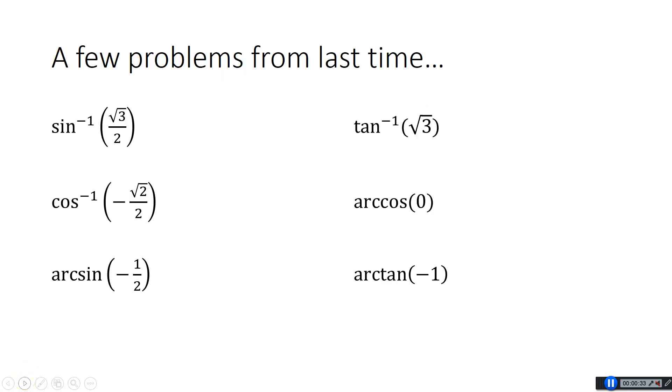We're going to start with some bell work, just a few problems from last time. If you want to pause the video here and see if you can figure out these values, feel free to do so. All right, let's take a look at them together. Sine inverse of root 3 over 2. Remember, I'm asking myself where is sine root 3 over 2? And it has to happen on the right side of the circle. Root 3 over 2 is a pretty easy one, that's pi over 3.